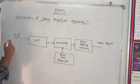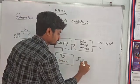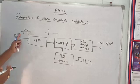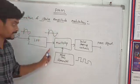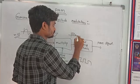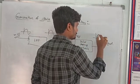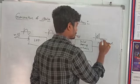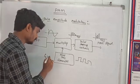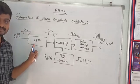Band limiting is necessary to avoid the aliasing effect in the sampling process. This is your message signal or modulating signal, M of T. This is the pulse train signal. The LPF removes the high frequency components which are greater than FM. The pulse train generator generates the pulse train at frequency FS such that FS is greater than or equal to 2FM. This is the Nyquist Criteria satisfied.